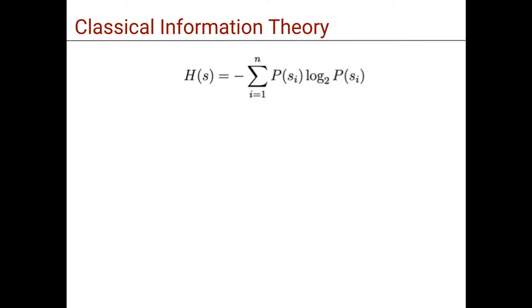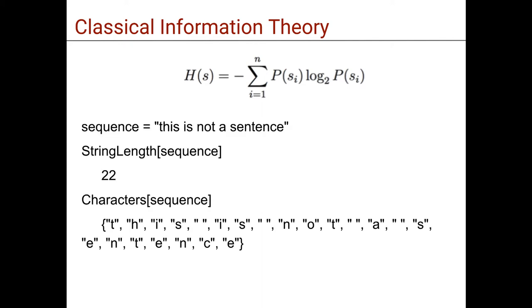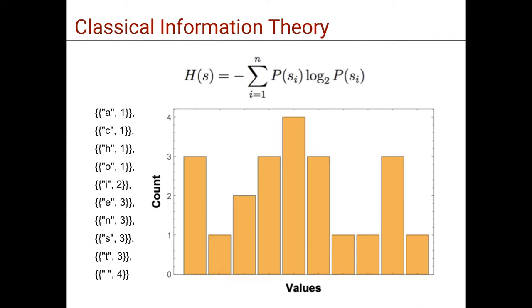We can illustrate its application with the following example. Let's take as a sequence something written in English, such as 'this is not a sentence', and look at its distribution of letters. We can then count how many times each symbol, in this case each letter, occurs in the sentence, hence effectively producing a discrete distribution of letters from that message.